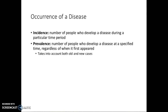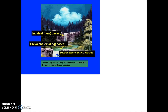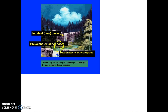A common illustration uses a waterfall. The incident cases are the new cases — like water coming down — while the existing cases are found within the lake below. The only way to exit the prevalence pool is if you die, you recover, or you leave the area in which your case is being counted.